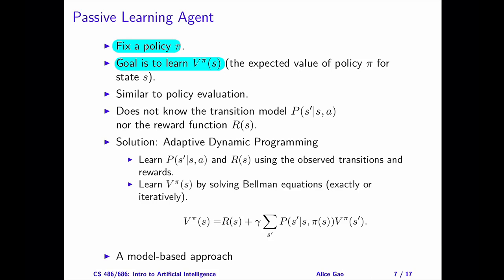The passive reinforcement learning problem is similar to the policy evaluation step in the policy iteration algorithm. Given a policy, we want to learn the utility values V. However, this problem is more difficult for two reasons. The agent does not know the transition probabilities, nor does it know the reward function.